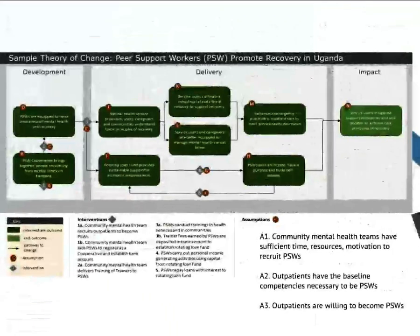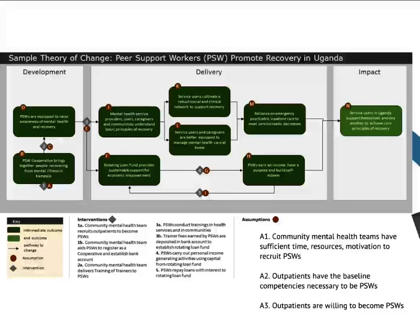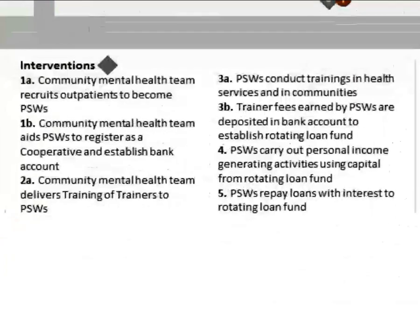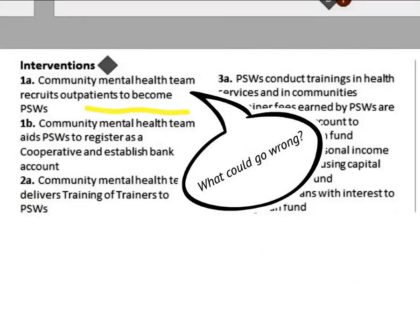I'm going to give you a real example of this happening. This is a peer support worker programme to promote recovery for people in psychiatric wards in Uganda. You don't need to look at the detail of the theory of change — we're just going to look at some of the assumptions. The first intervention is that the community mental health team have to recruit people to become peer support workers, and you essentially ask the question: what could go wrong in order to develop your assumptions?